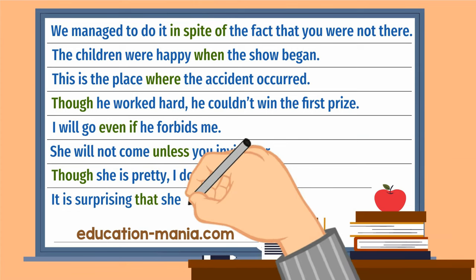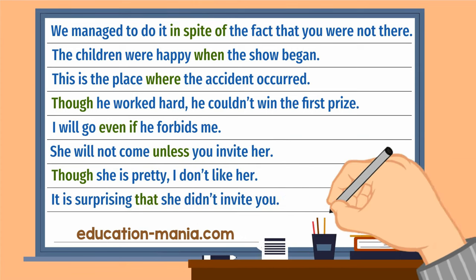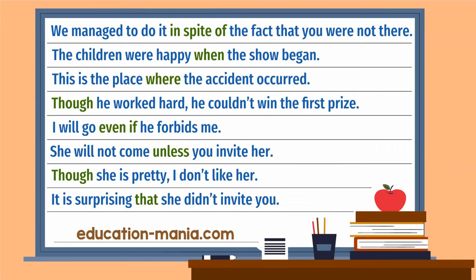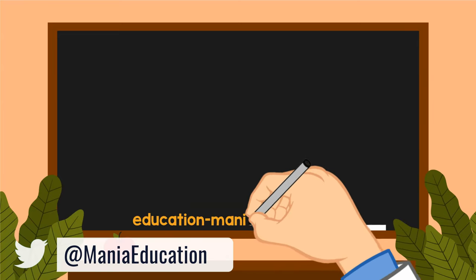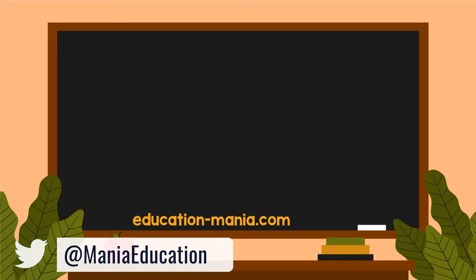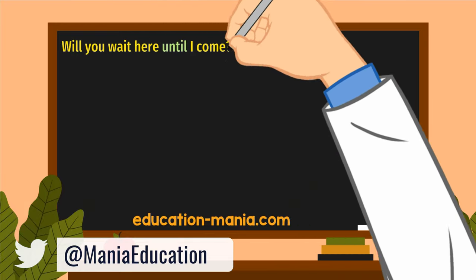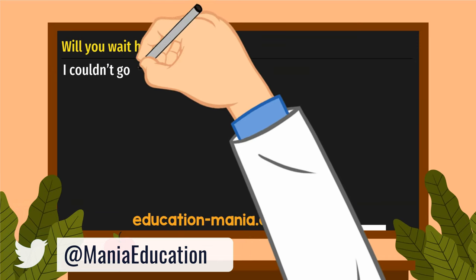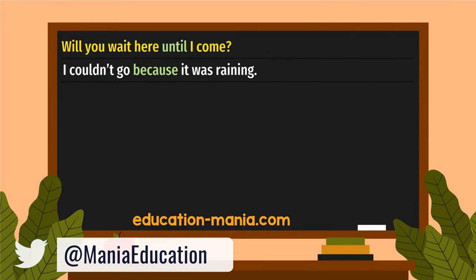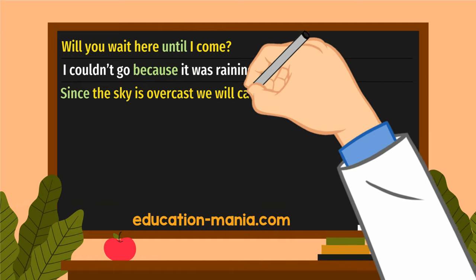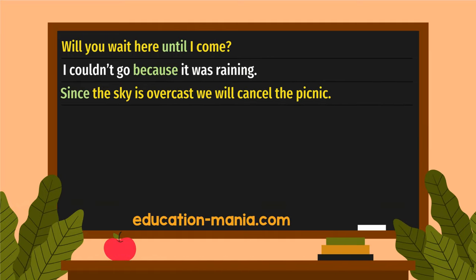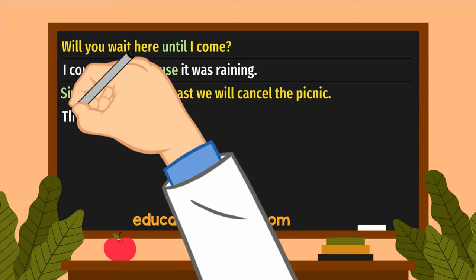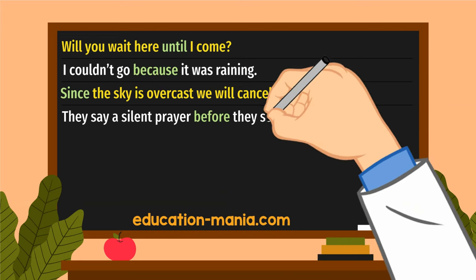It is surprising that she didn't invite you. Will you wait here until I come? I couldn't go because it was raining. Since the sky is overcast, we will cancel the picnic. They say a silent prayer before they start the class.